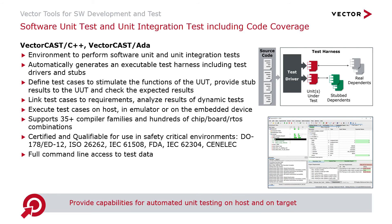VectorCast C++ and VectorCast ADA are complete unit testing solutions for C, C++, and ADA programming languages. VectorCast builds a test harness around a piece of your code, automatically provides stubs for any dependencies not provided in the source code, and provides a GUI interface so you can set up input parameters and expected values for your code under test. You can then execute those tests within VectorCast to verify expected values match results, check code coverage, and more. VectorCast is a test authoring tool that does test execution, test verification, provides code coverage, and has complete reporting and metrics.